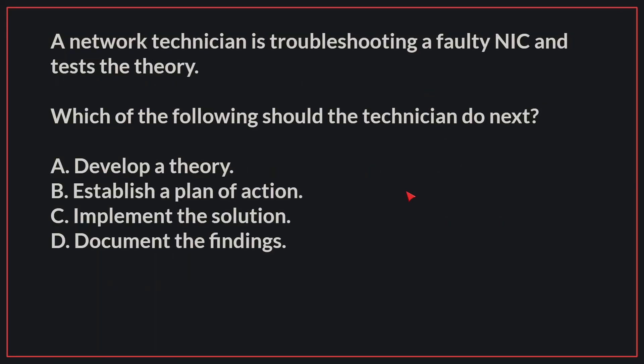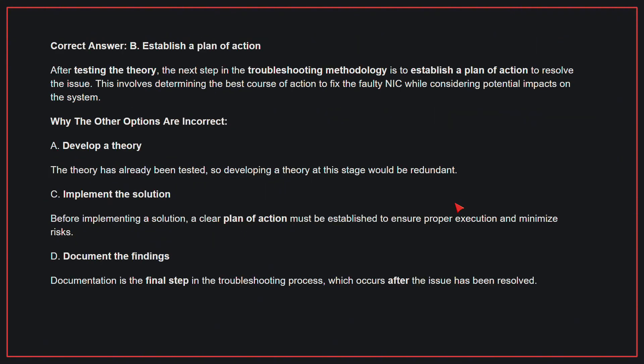A network technician is troubleshooting a faulty NIC and tests the theory. Which of the following should the technician do next? The correct answer is B: Establish a plan of action. After testing the theory, the next step in the troubleshooting methodology is to establish a plan of action to resolve the issue. This involves determining the best course of action to fix the faulty NIC while considering potential impacts on the system.